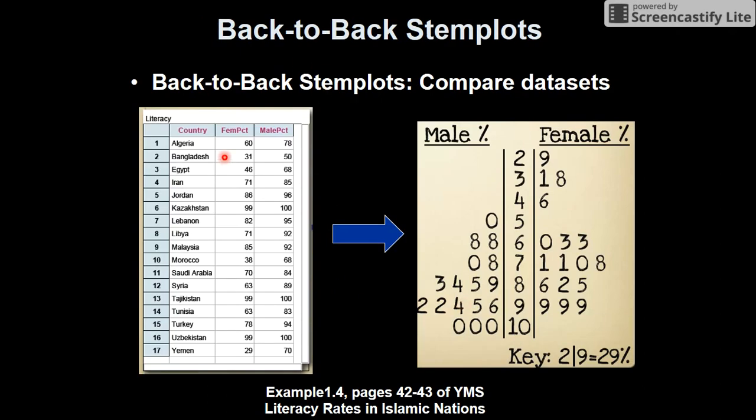Back to back stem and leaf plots. This is when there's three columns. So you've got your male and your female. So what you're going to do is you're going to put your 2, 3, 4, 5, 6, 7, 8, 9, 10, go up, whatever. And then your female will go on that side, 9.